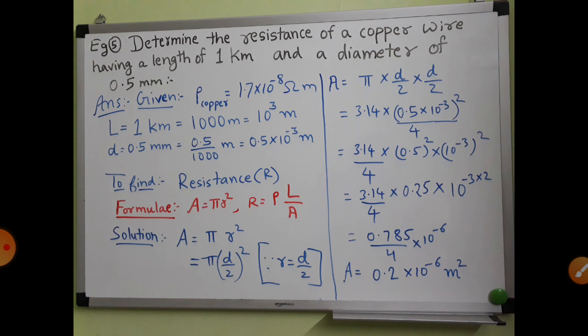Let us read the example: Determine the resistance of a copper wire having a length of 1 kilometer and a diameter of 0.5 millimeter. What is given? Length of copper wire is 1 kilometer and diameter is 0.5 millimeter. While calculating, you should know that units should be in the same dimension — everything should be in SI units.